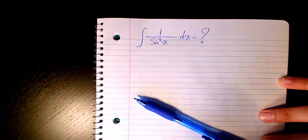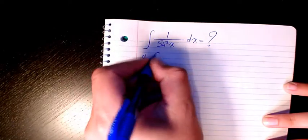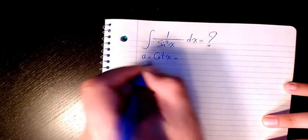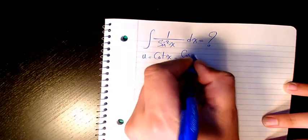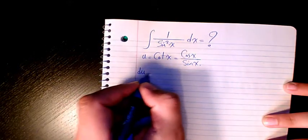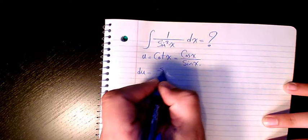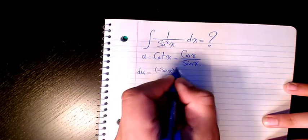So I have u as cotangent x. Cotangent, as you know, is cosine x divided by sine x. So du equals the derivative of the numerator, which is negative sine x, times the denominator,